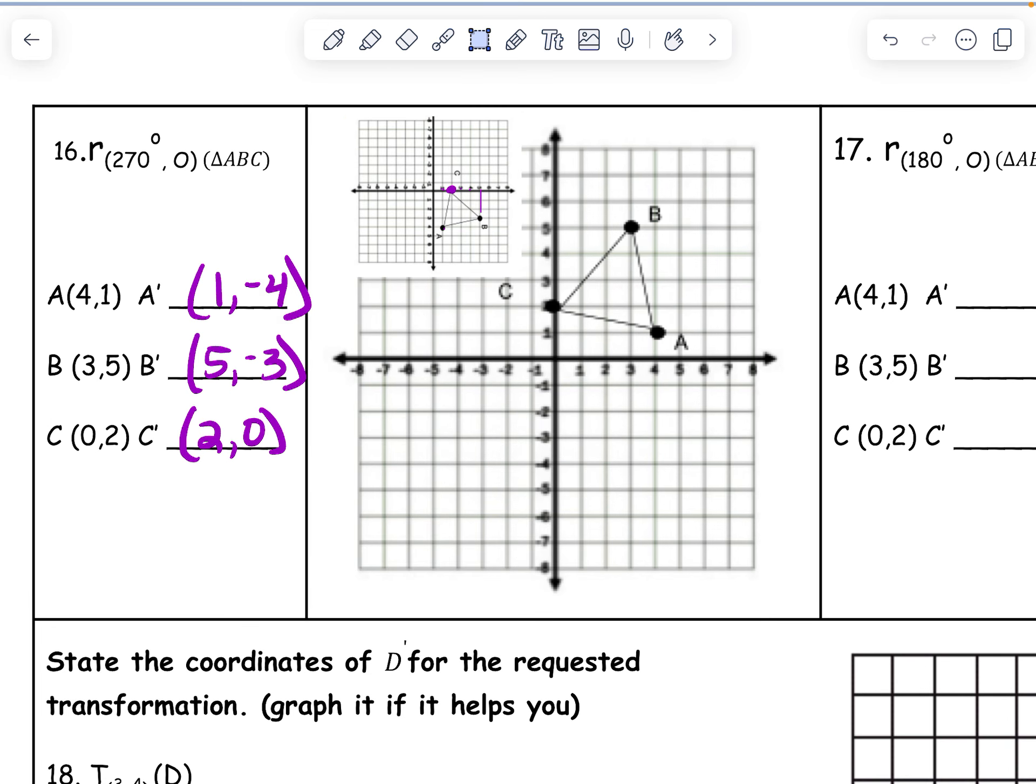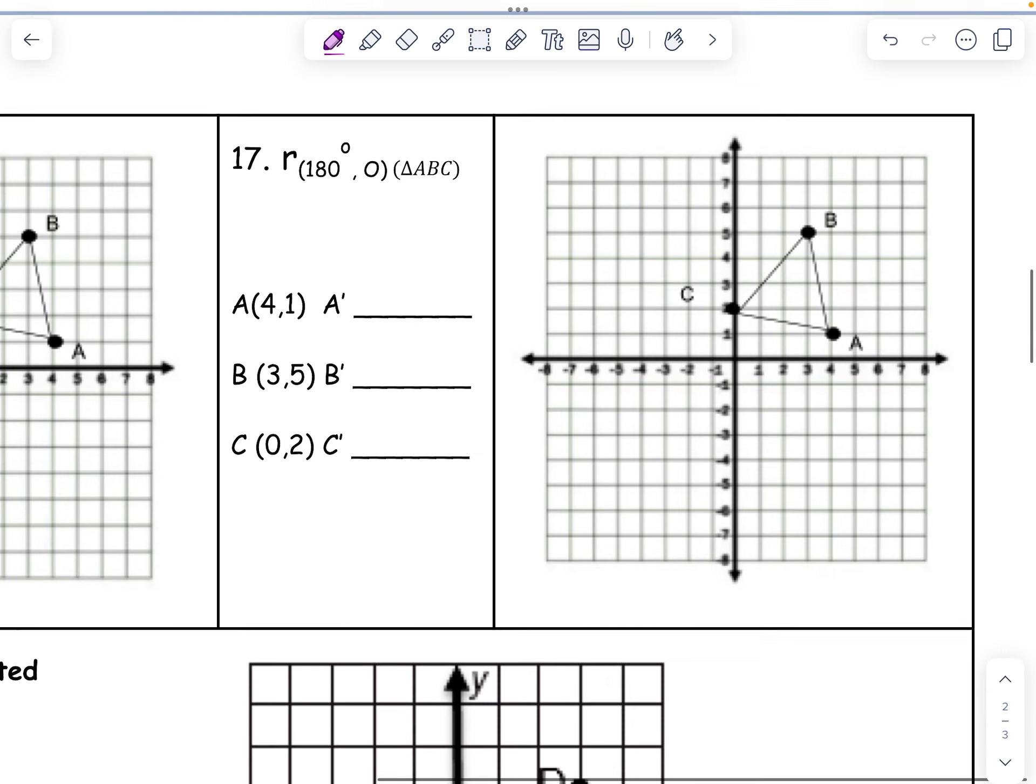But you also didn't need to do that. If you remembered your 270 rules, it's switch X and Y, change the sign of the new Y. So it looks like that when you write down the rule. Switch the sign of the new Y. We did that. We did that. And you can't change a zero. So we did it. Gorgeous.